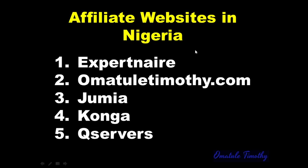Now let's look at the websites where you can register as an affiliate in Nigeria. The first one is Espartner, the second is Omatleti Moti dot com, the third is Jumia, the fourth is Konga, and the fifth is Q Servers. These are the major ones I will show you, though the list is not exhaustive.